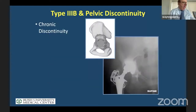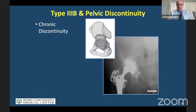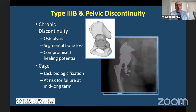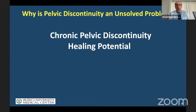Now in the last few minutes, I'll discuss pelvic discontinuity — most of them are 3Bs. Cages don't work. Why is pelvic discontinuity a problem? Because it's a chronic non-union. Plates and screws do not work. Choice number one is a custom tri-flange — no cages.